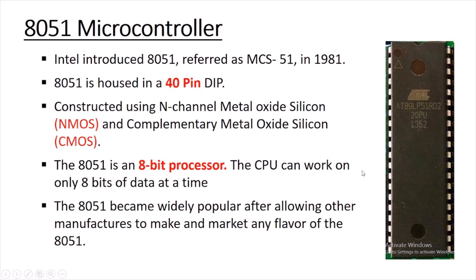Earlier 8051 was manufactured and fabricated using complementary metal oxide silicon semiconductor (CMOS), and later it was replaced by the N-channel metal oxide silicon semiconductor (NMOS) because of speed. NMOS was offering very good speed compared to CMOS, and later with the development in technology, NMOS replaced CMOS.